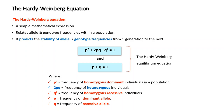The Hardy-Weinberg equation is a simple mathematical expression. Since only two alleles exist at the locus, their frequencies must sum to 1, expressed as p + q = 1, where p is the frequency of the dominant allele and q is the frequency of the recessive allele. Expansion of this gives p² + 2pq + q² = 1, where p² is the frequency of homozygous dominant individuals, 2pq is the frequency of heterozygous individuals, and q² is the frequency of homozygous recessive individuals.